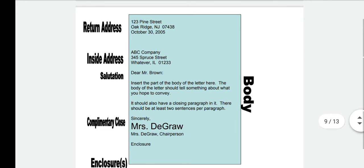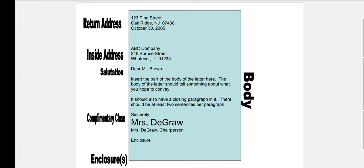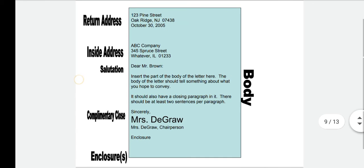Now, this is a sample informal letter — this is how you will write a letter in your exams. First is the written address. If the letter is not received by the relevant person, it can be returned to this address — for example, 123 Pine Street, Oak Ridge, NJ. Below the address, the date the letter was written is mentioned. After that, you write the inside address — for example, ABC Company, Spruce Street. Then you write the salutation — 'Dear Mr. Brown.' After the salutation, you write the body, which should tell what you hope to convey and include a closing paragraph.